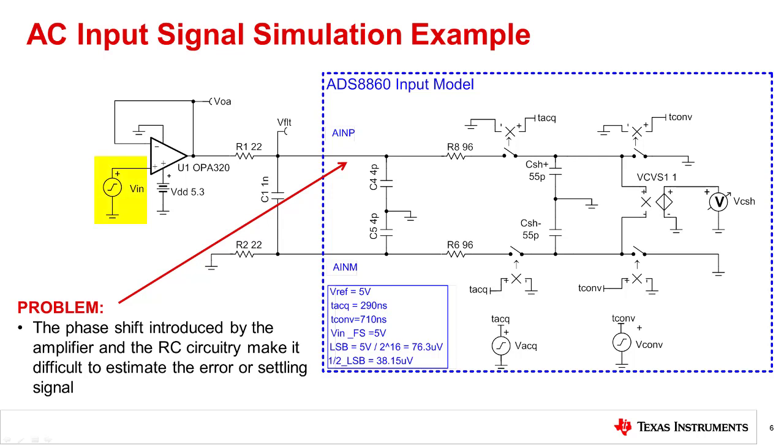To do this, you will have to change the input signal from a DC source to an AC source. Also, we will want to compare the sampled signal across the sample and hold capacitor to an AC signal. However, to do an accurate comparison, we will have to take into account the phase shift of all the RC circuitry, as well as the offset and phase shift of the amplifier.